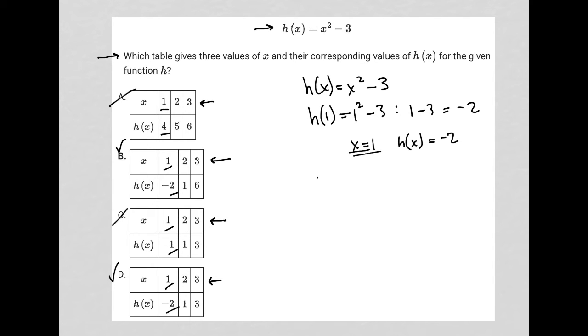Now let's try 2. So h of 2 would equal 2 squared minus 3, which is the same as 4 minus 3, which is equal to 1. So again, when x equals 2, h of x should be equal to 1.